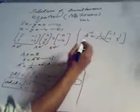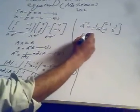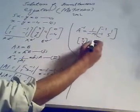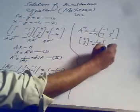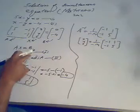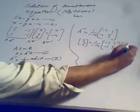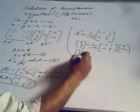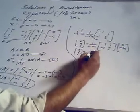We substitute the value of A inverse into equation (I) and also use the value of B. So XY = (1/-4) × [-1, 1; 1, -5] × [0; -4]. Now we need to multiply these two matrices, which we can do easily.